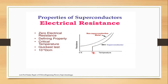When resistance becomes zero and the critical temperature is also zero, the current in that condition is infinite. So that phenomenon is called superconductivity.